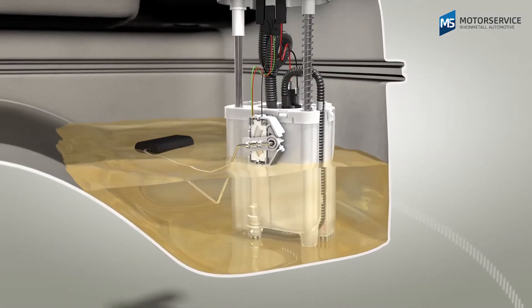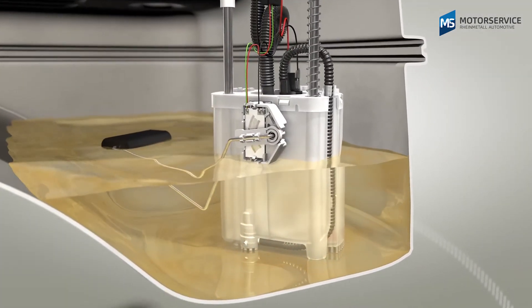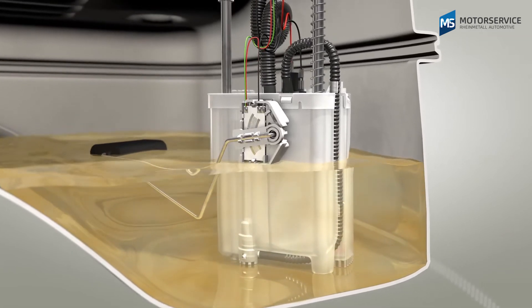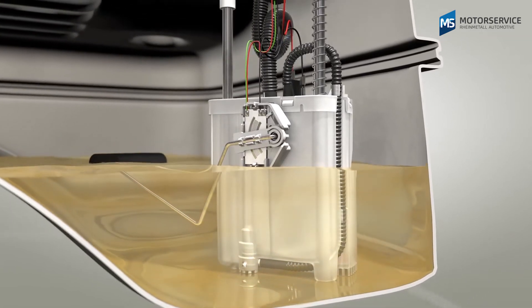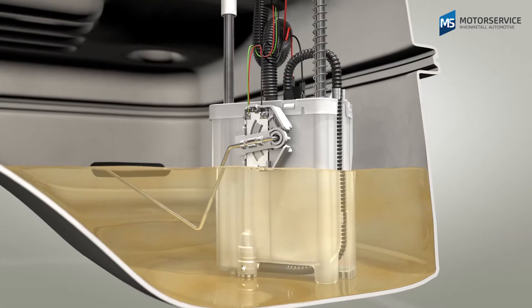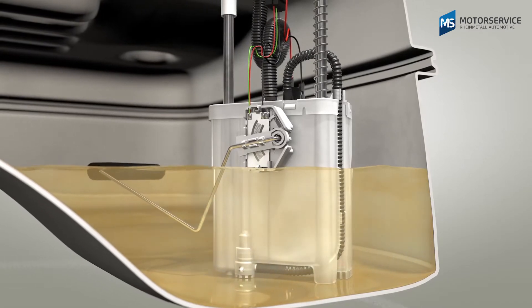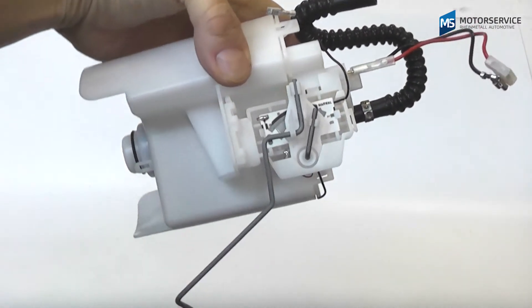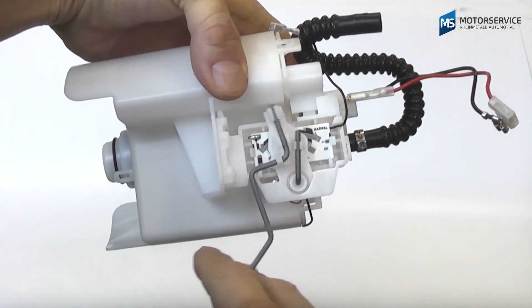Fuel delivery modules usually have a fluid level sensor that transfers the fuel level to a sliding contact via a lever arm. In most cases, the lever arm can be moved very easily.